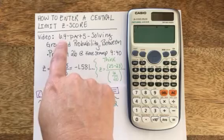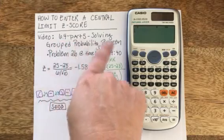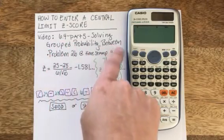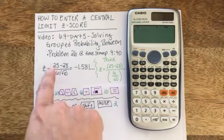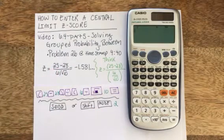I took this particular problem from my video titled 6.4, Part 5, Solving Group Probability Between, because it is a probability of something being between 25 and another value, but I'll just show you the 25.